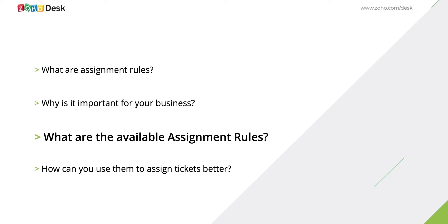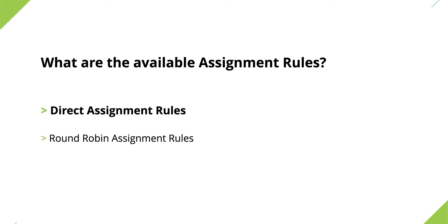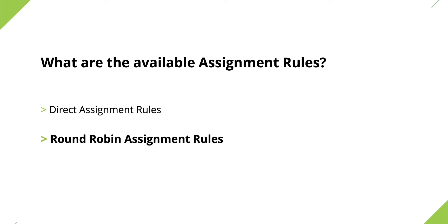Next we're going to look at the types of assignment rules available in Zoho Desk. First we have the direct assignment rule, where you define criteria for the rule and tickets get assigned if the preset conditions are met. And then we have the round-robin assignment rule, where tickets are assigned one by one to the specified agents in a circular fashion.